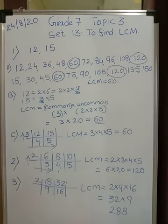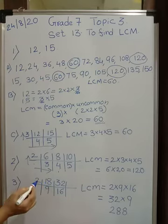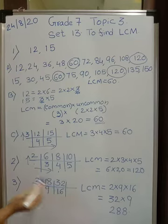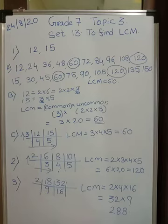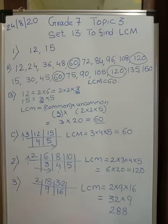That is the second problem. Third problem: 18 and 32. The even endings tell you these numbers are divisible by 2, so I start with 2. Dividing by 2 gives 9 and 16. Now there is no single number dividing both 9 and 16 — 9 is divisible by 3 but 16 is not. My condition requires at least 2 numbers to be divisible, so I must stop.